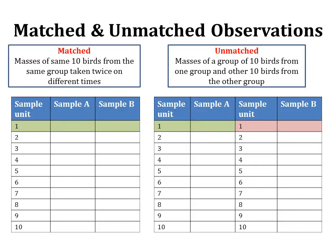A table illustrates the difference: in the matched case, 10 birds are measured twice for the same variable in sample A and sample B, taken from the same sample units. In the unmatched case, 20 observations are taken from two different populations — 10 birds in sample A and another 10 birds in sample B.